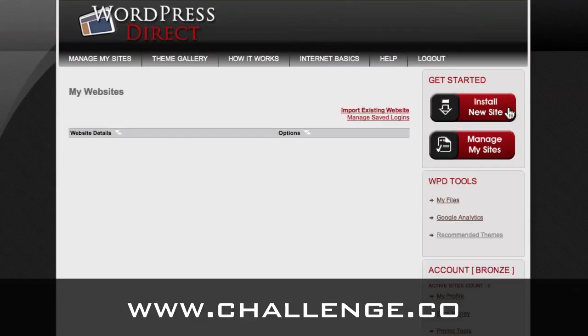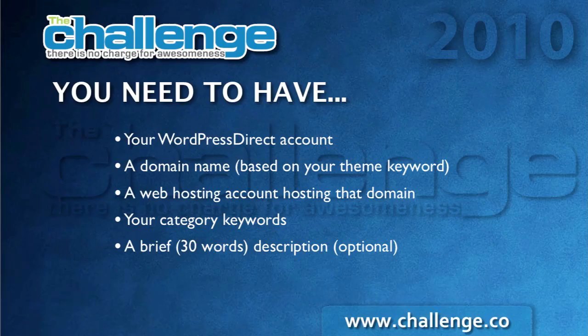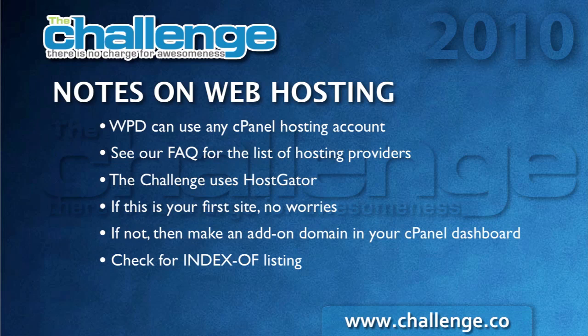What we want to do now is do an installation, which is going to be this big red button. Before we go there, there are a couple of other things I want you to have planned ahead for. Let's talk a little bit - just a refresher on web hosting. WordPress Direct can use any cPanel hosting account. cPanel is something that if your hosting account provider has that environment, it'll be explicitly listed. If you don't know of a hosting provider to use, you can see our FAQ - Frequently Asked Questions - for the list of hosting providers that we support. The Challenge uses HostGator as its preferred hosting provider. We've run thousands of people through HostGator with no problems. So if you are on the fence, we recommend you choose HostGator. If this is your first site, you have no worries - just get a HostGator account as advised by Kenny. If you already have sites and hosting accounts, what you can do is make an add-on domain in your cPanel dashboard and use that instead of having to buy a new account just for this site.